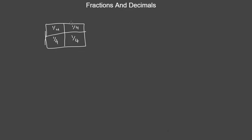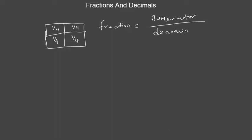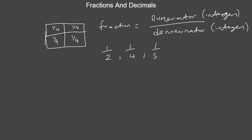A fraction is a part of a whole. A fraction is made up of two components: a numerator and a denominator. Each of these are whole numbers, or we call them integers. Examples of fractions are 1 over 2, 1 over 4, 1 over 5, and so on.